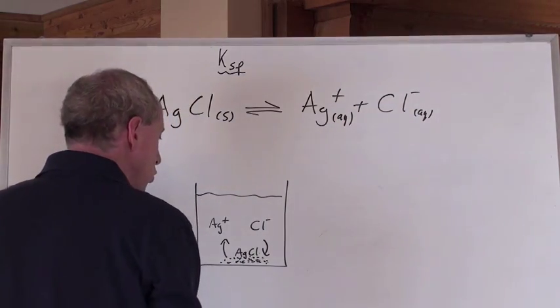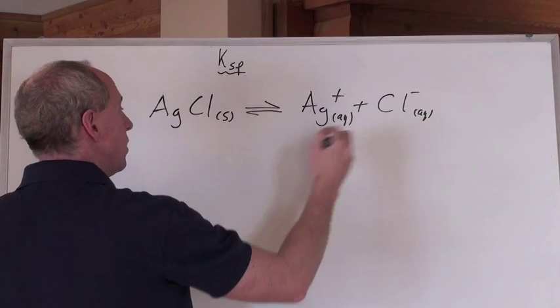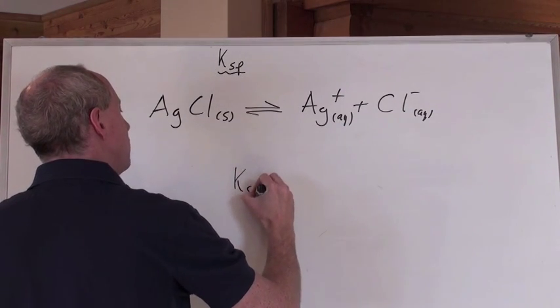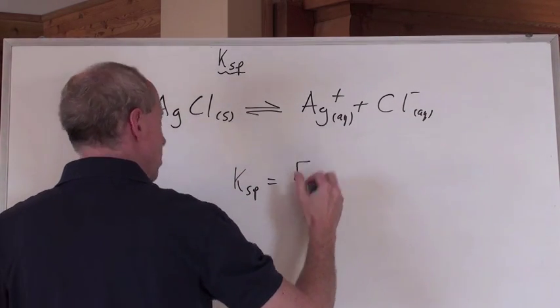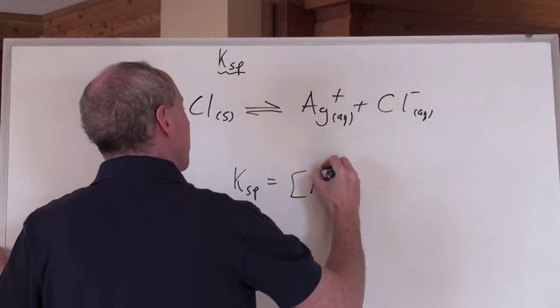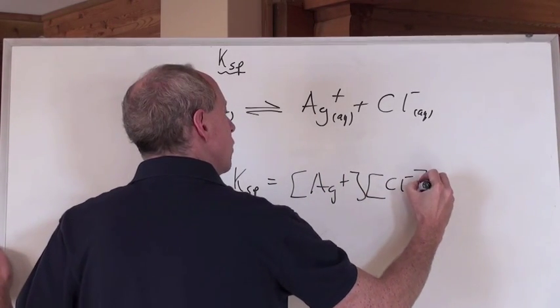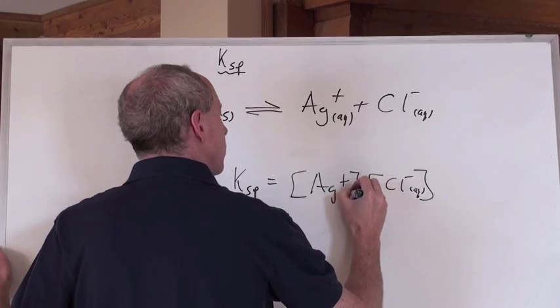And so when you write the equilibrium expression for this, you're going to get Ksp equals the concentration of... and I'm going to write it properly on one line: the concentration of the Ag+ times the concentration of the Cl-. Those are both aqueous; sometimes we don't write that explicitly.